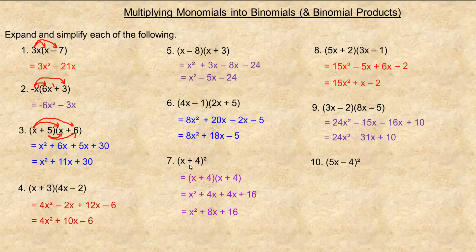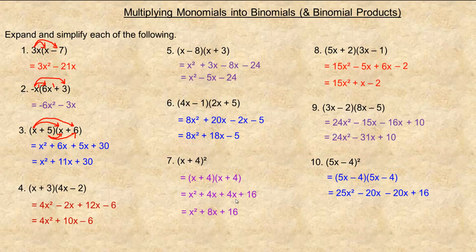Number ten is similar to number seven — we're squaring the binomial (5x minus 4), so there are two of them multiplied together. 5x times 5x is 25x squared, 5x times negative four is minus 20x, negative four times 5x is another minus 20x, and negative four times negative four is plus 16. Since we're squaring, both middle terms are the same: negative 20x and negative 20x add to negative 40x. The answer is 25x squared minus 40x plus 16.